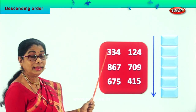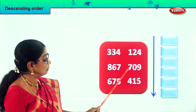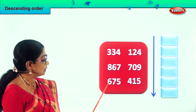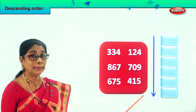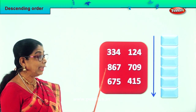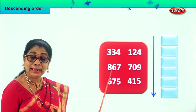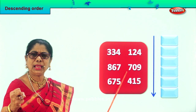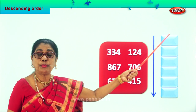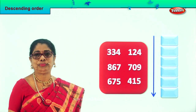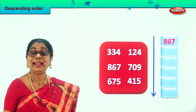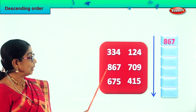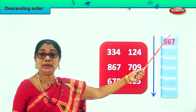We have three hundred, one hundred, eight hundred, seven hundred, six hundred, four hundred. Among all, we have eight hundred — the biggest. Eight hundred sixty-seven. So we pick eight hundred sixty-seven and put it right on the top. We are arranging numbers in descending order, so eight hundred sixty-seven goes right on the top.